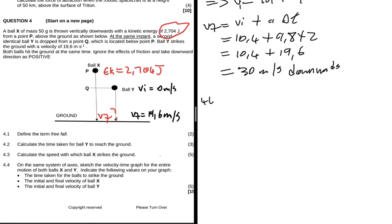4.4 says on the same set of axes, sketch the velocity-time graph for the entire motion of both X and Y. We need velocity-time graph, so our velocity is on the y-axis and time as usual is on our x-axis. We have velocity here in meters per second and time in seconds. Let's pay attention to ball Y first. Ball Y starts at zero meters per second when it gets dropped and it goes up to 19.6.